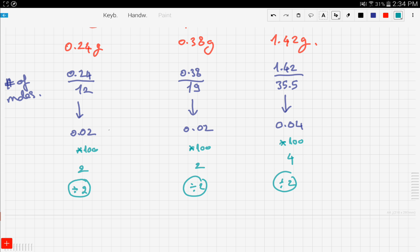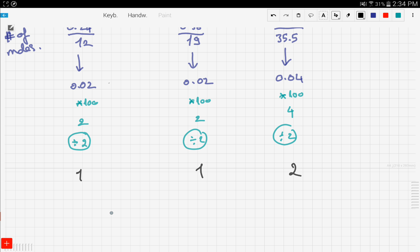Divide by 2 for each element. Now we get 1, 1, and 2. Those are the ratios of the elements, so you have CFCl2 and that's your empirical formula.